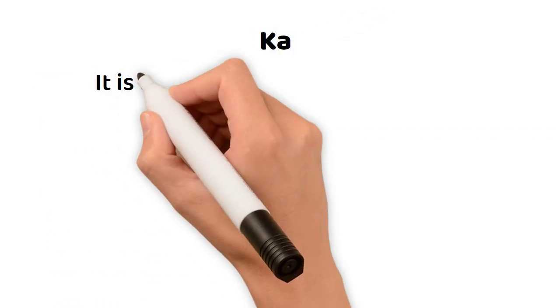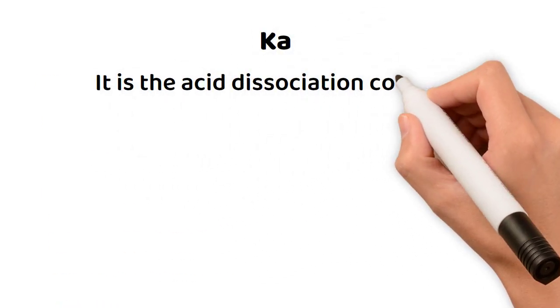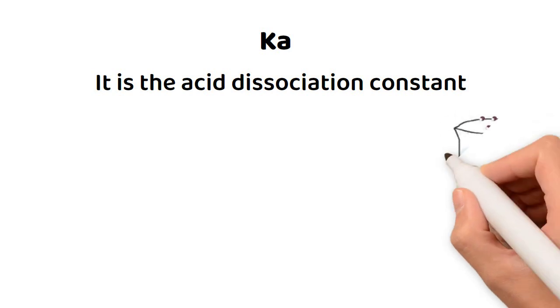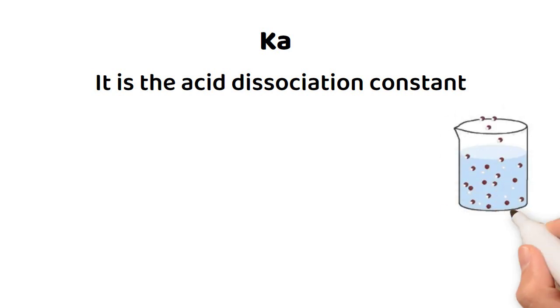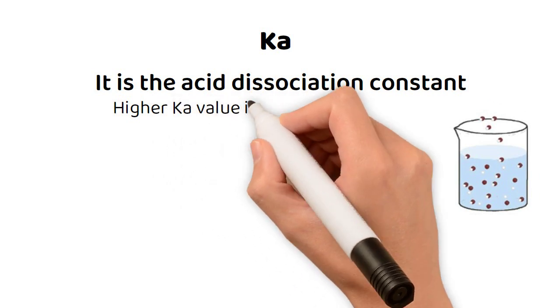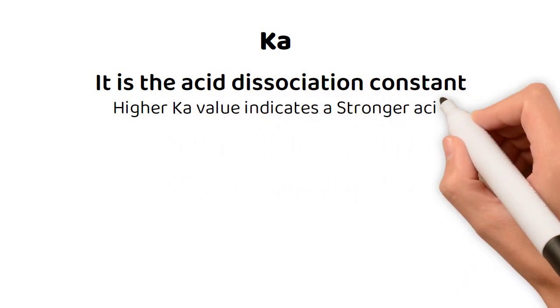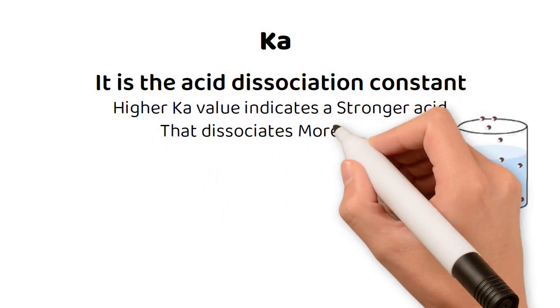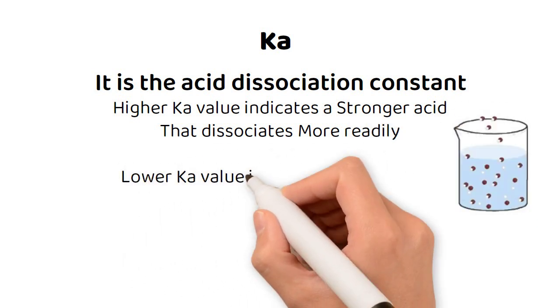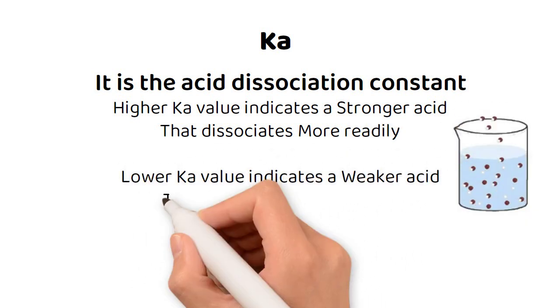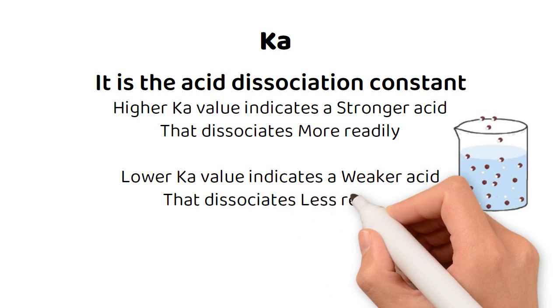Ka is the acid dissociation constant, which represents the degree of acid dissociation in solution. A higher Ka value indicates a stronger acid that dissociates more readily in solution, while a lower Ka value indicates a weaker acid that dissociates less readily.